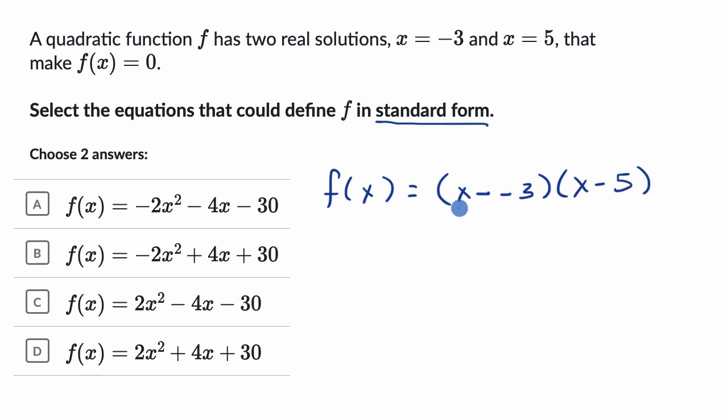Now, why does this work? Well, think about it. If x is equal to negative three right here, and if I were to subtract another negative three, well, then this is going to be equal to zero. Zero times anything is zero, and then f of negative three would be zero. Similarly, if x were equal to five here, then this whole thing would be equal to zero. Zero times anything is zero, so f of five is zero.